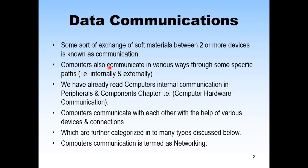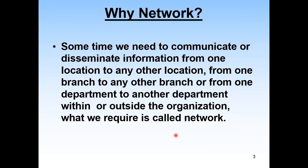Computers communicate through specific paths: internal and external communication. We already discussed internal communication in the chapter on computer hardware. Computers communicate with each other via various devices, peripherals, components, and connections. Communication on a network is termed networking. We need a network when we need to communicate or disseminate information from one location to another — from one branch to another, or from one department to another within or outside an organization.